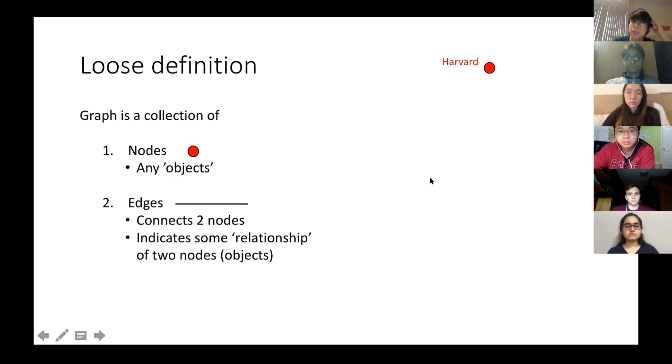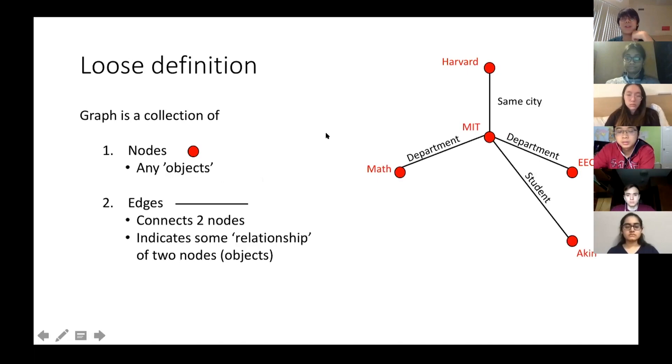Here I have a node that represents Harvard and a node that represents MIT. They both can be connected by the edge that says they are in the same city of Cambridge. I can have a node of math and EECS, both are the department at MIT. I have Akin, this is me, who is a student at MIT. I study math and EECS. I can have Alice who loves math and Bob who hates math, and Alice and Bob are rivals.